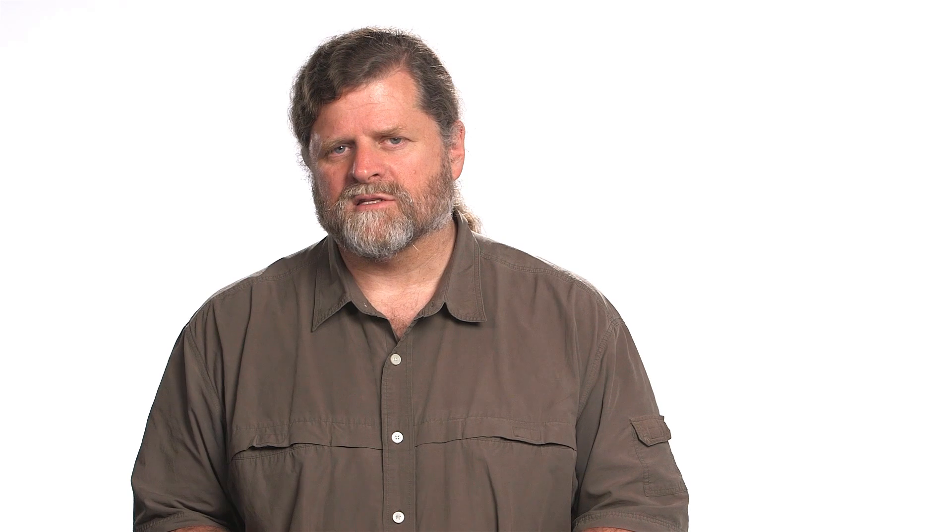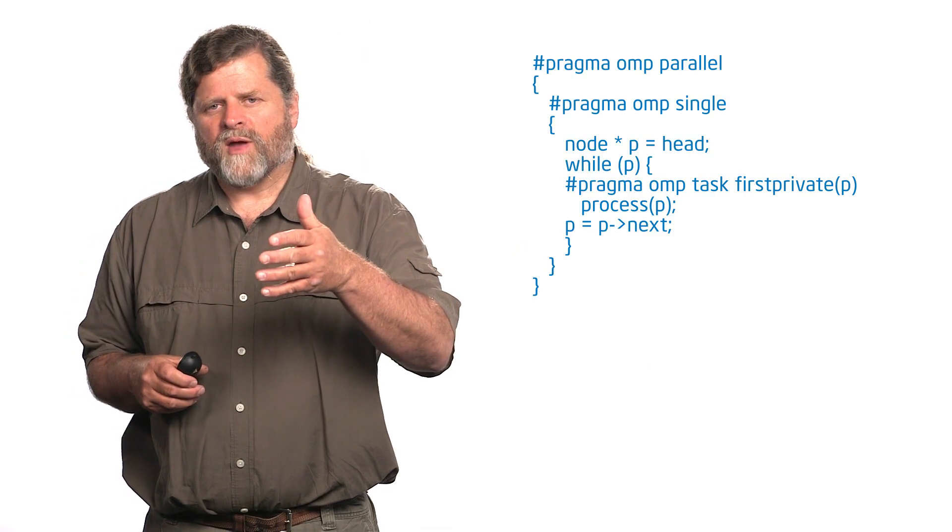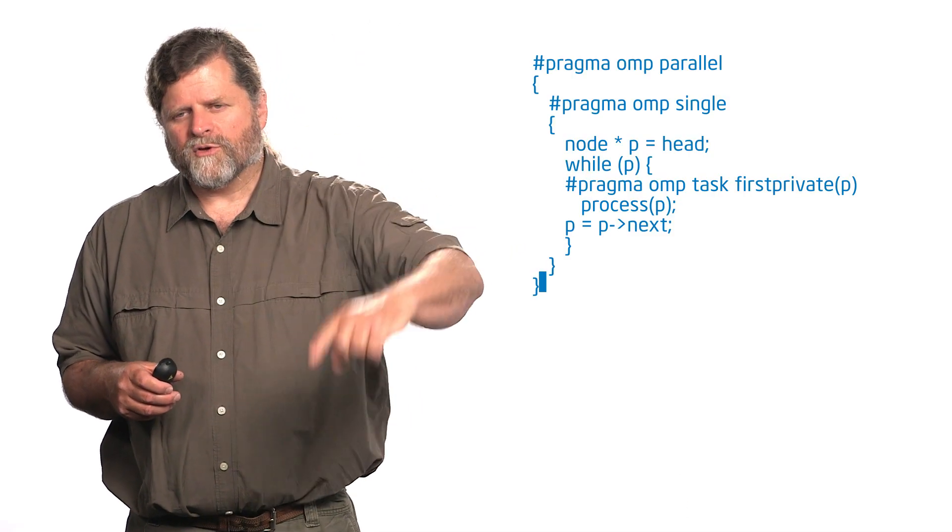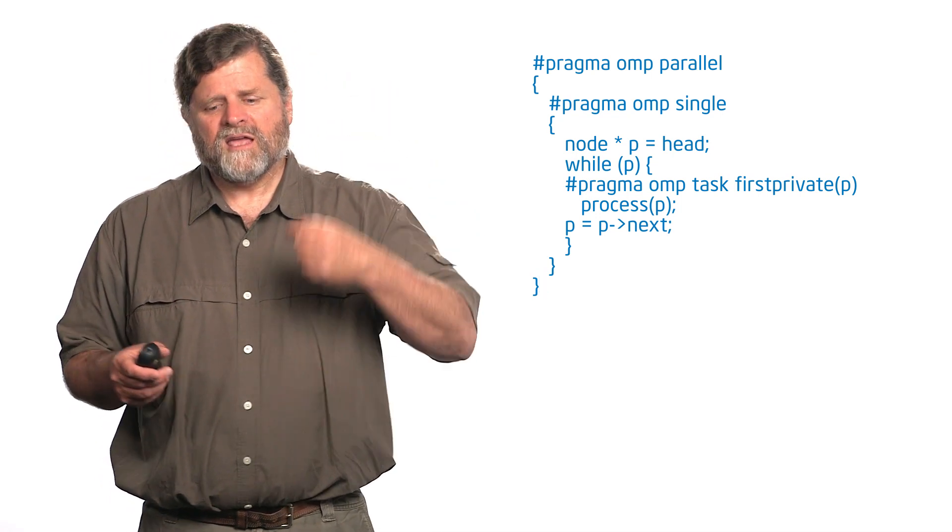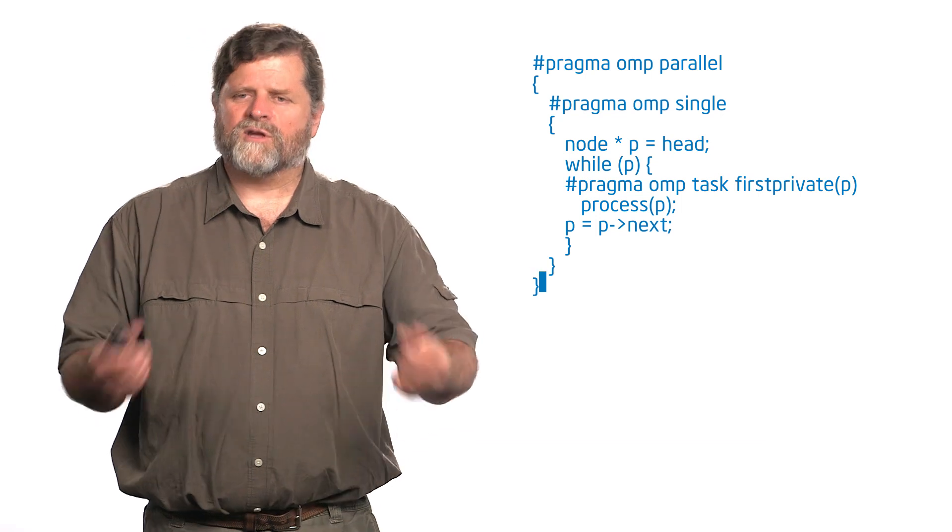Each task will do one pointer to an element of the list. So now that thread that does the single will go through the entire while loop, create all that set of tasks, then it will hit that barrier. Then it will join the other threads in working through those tasks.